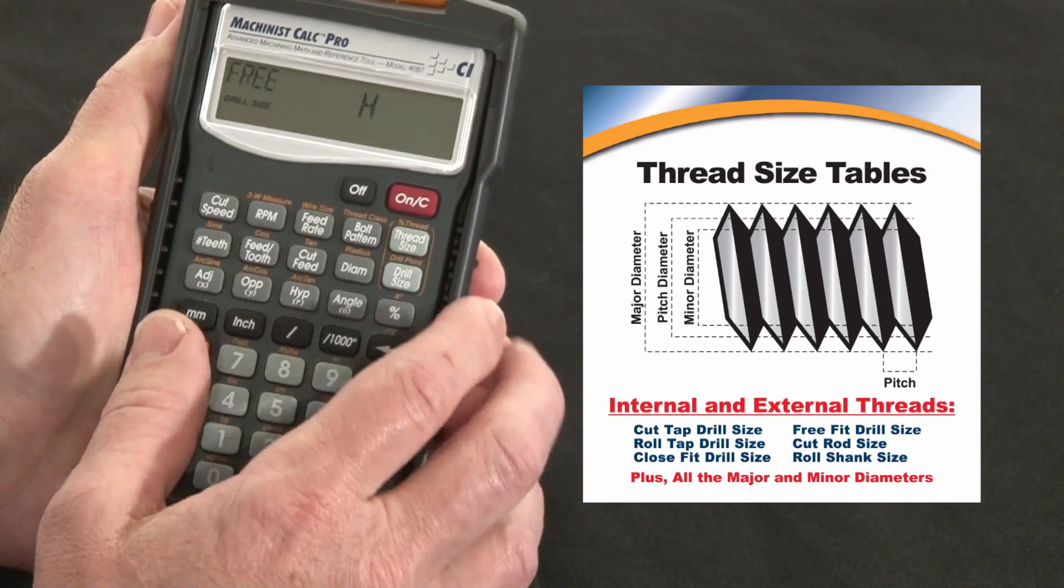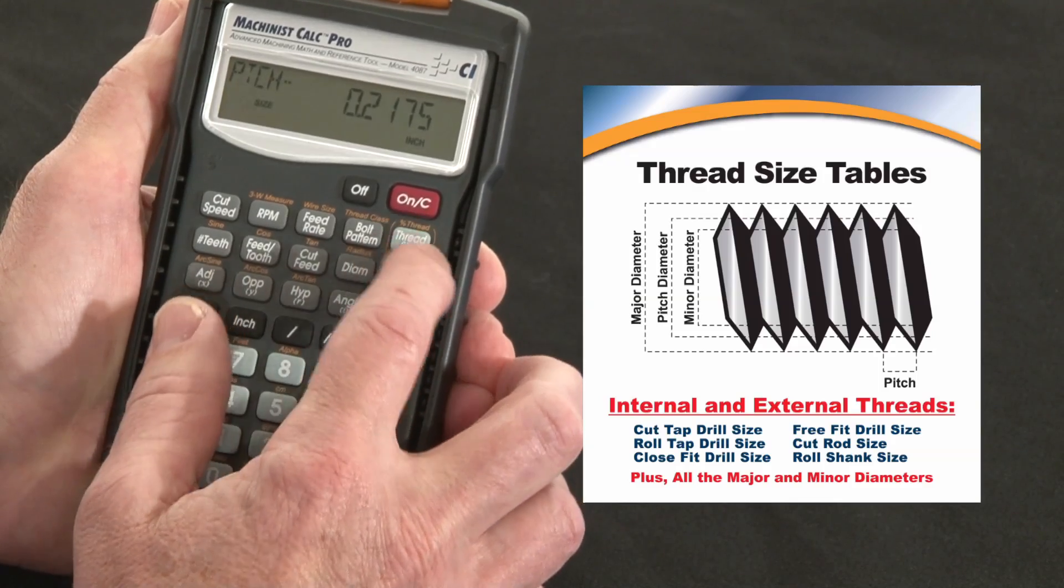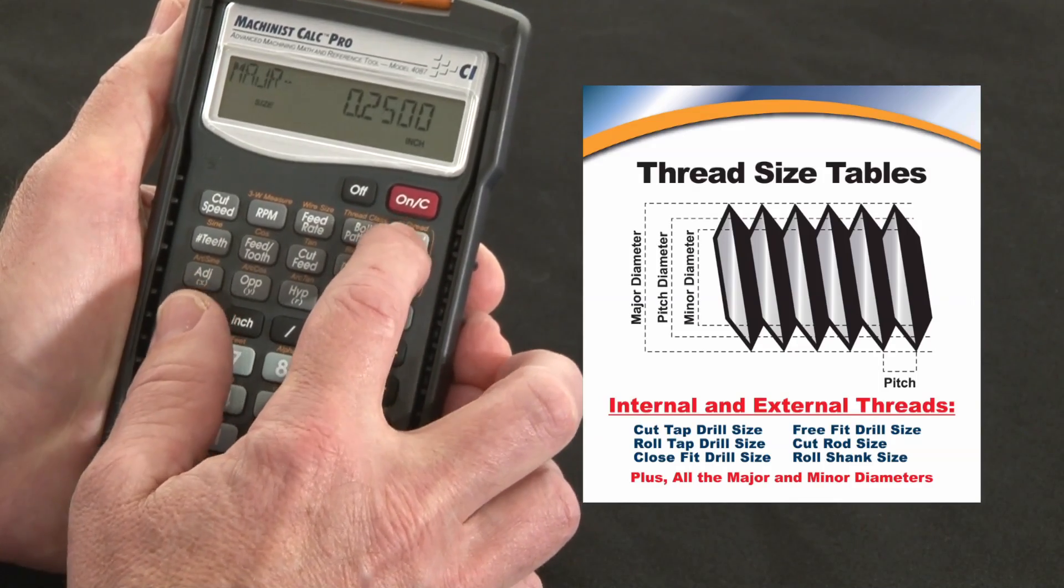my close fit is going to be a size F, my free fit is going to be size H, and then it will give me all my major and minor pitch diameters and characteristics all the way through.